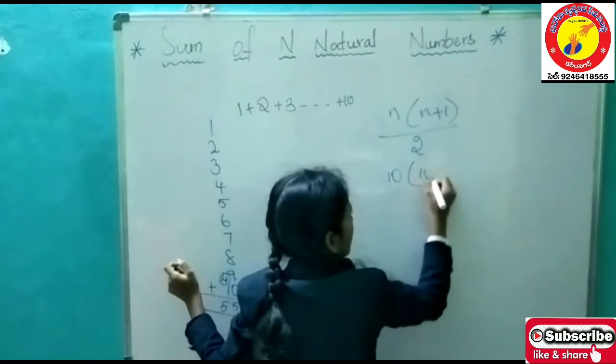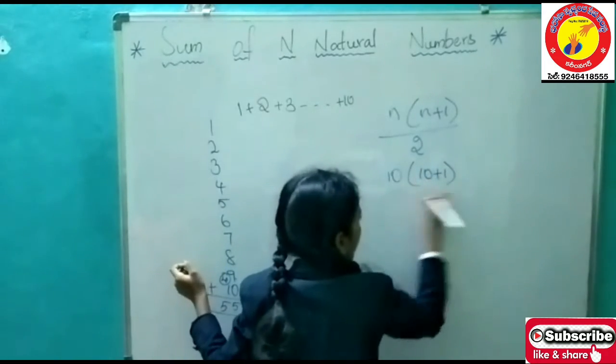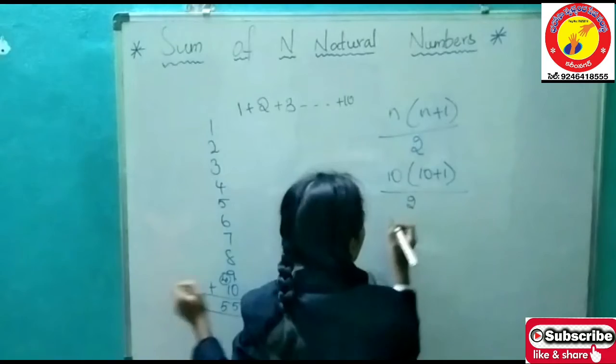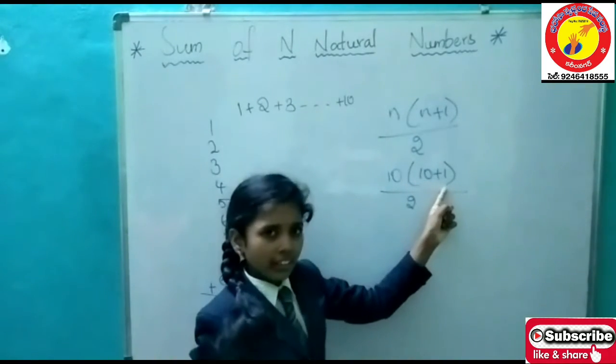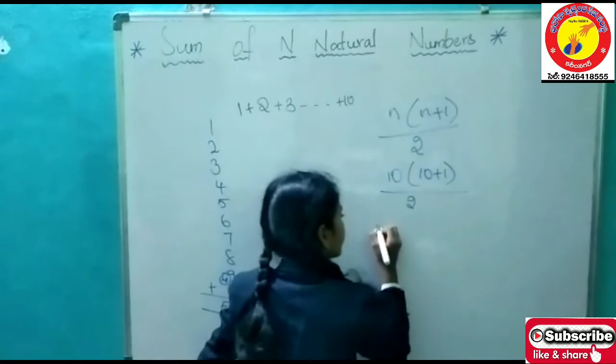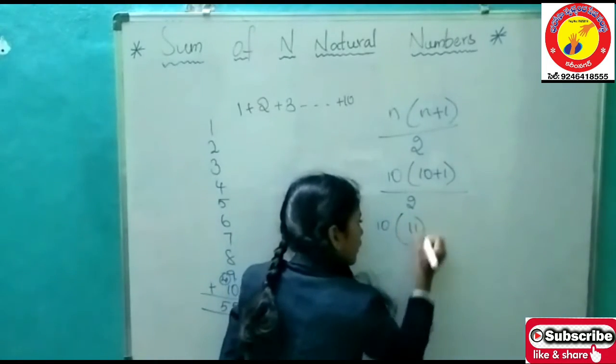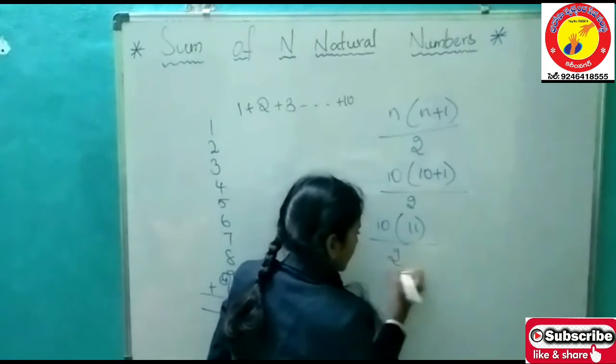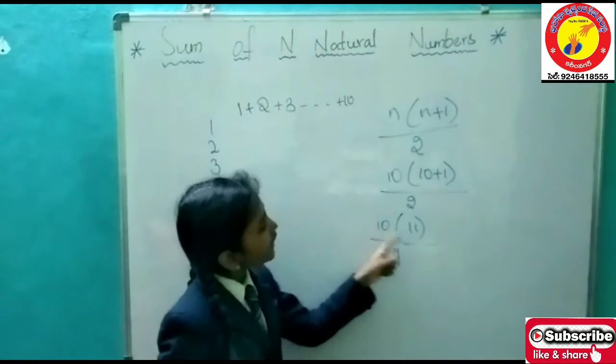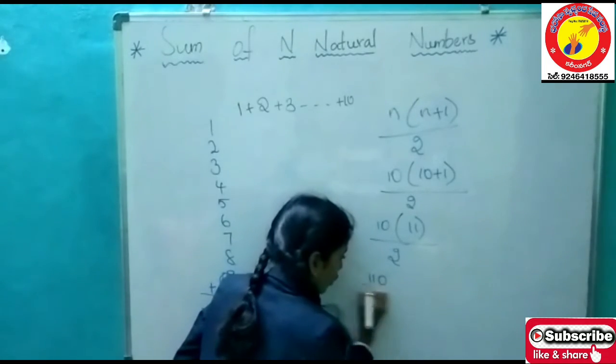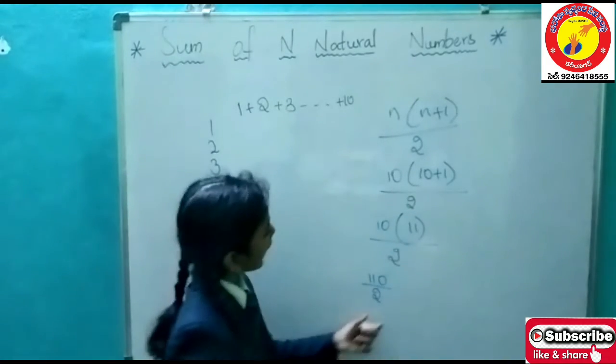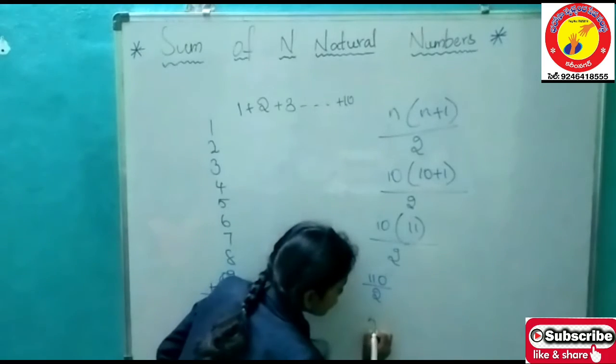So, 10 of 10 plus 1 by 2. 10 plus 1 is nothing but 11. 10 into 11 is 110. 110 by 2 is 55.